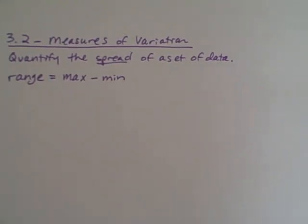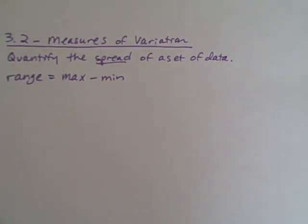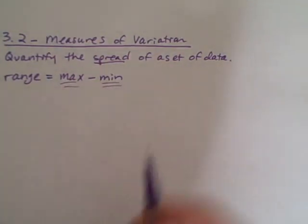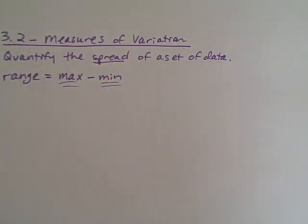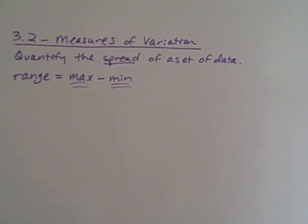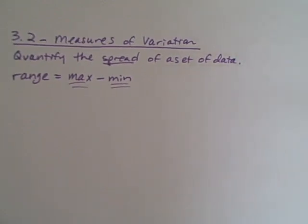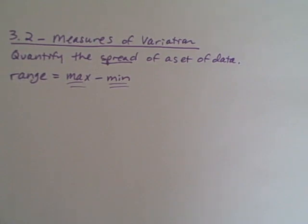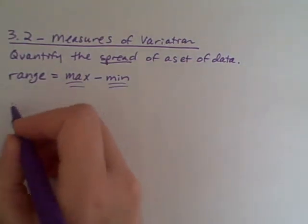That being said, the range does have one definite disadvantage. Since it only takes into account two points of data, it's actually not very good at coming up with an estimate of how all of the data is spread out. It only looks at these two values.